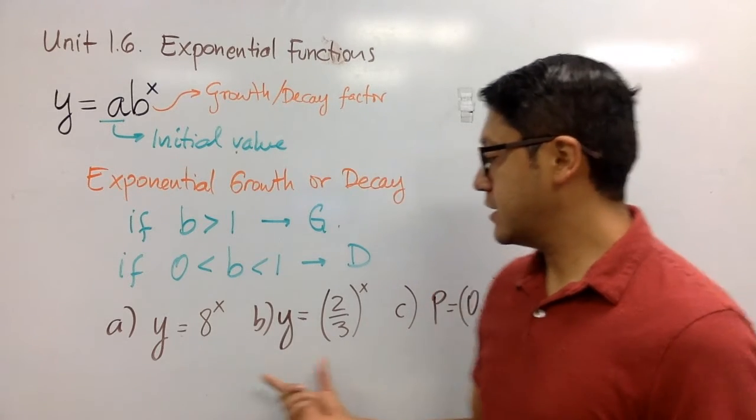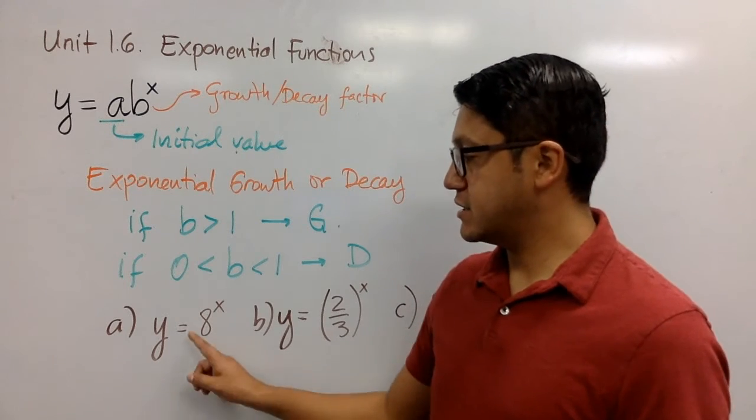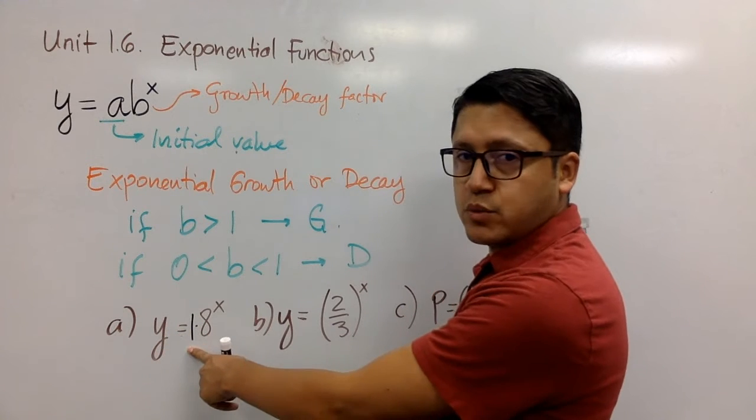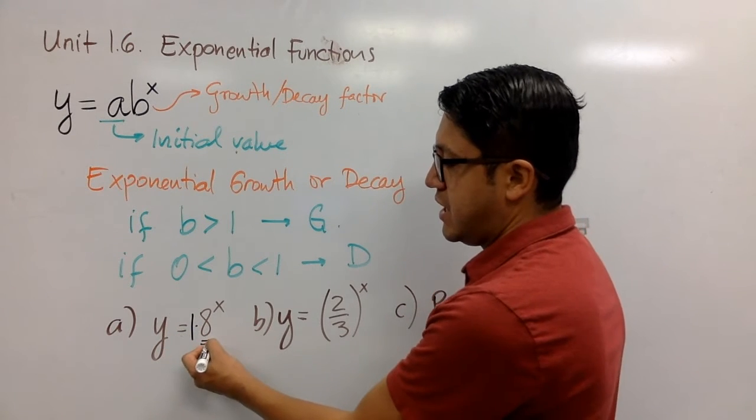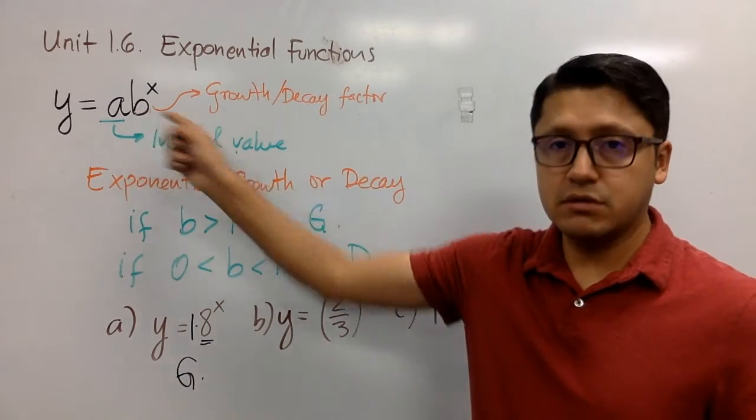So let's identify what it is in each of these three exercises. In this case, what is the initial value? It's important because sometimes we tend to confuse that. The initial value is 1 and B is 8, so it means that we're talking about growth because B is greater than 1.